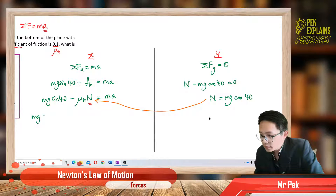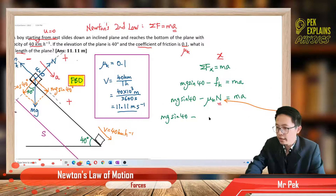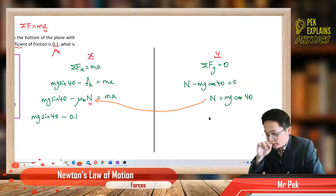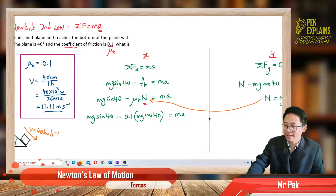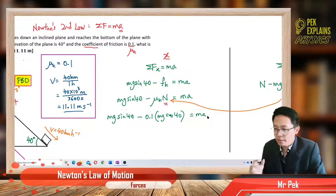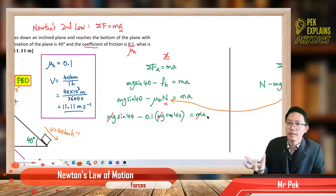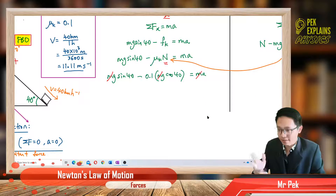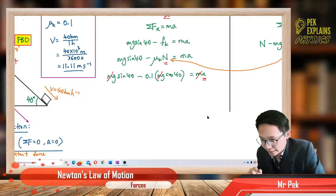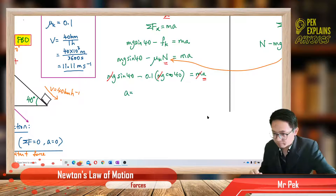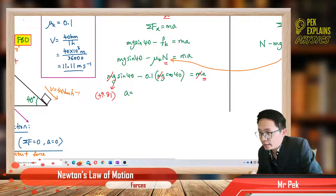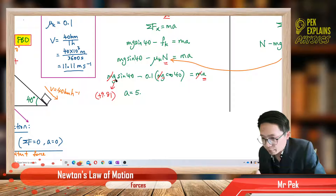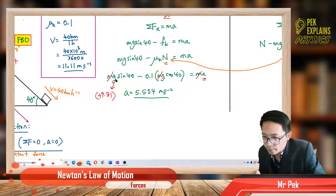Substituting in: Mg sin 40 − μk × Mg cos 40 = ma. With μk = 0.1 and normal force = Mg cos 40, the mass m cancels from both sides — we no longer need the value of mass. From here we can calculate the acceleration. Substituting g = 9.81, we get acceleration = 5.554 m/s².